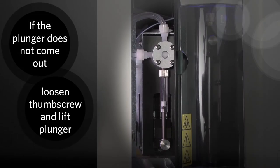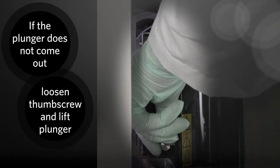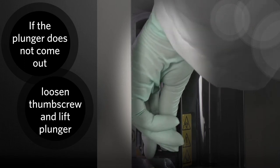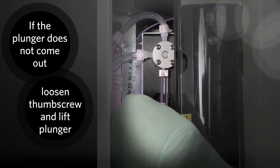If the base of the plunger did not come out of the arm when it cycled, loosen the thumb screw a little more and very lightly attempt to lift the plunger away from the base.